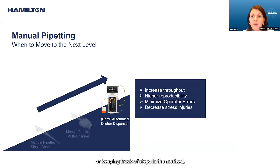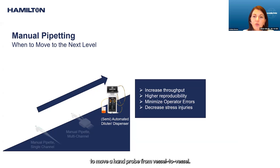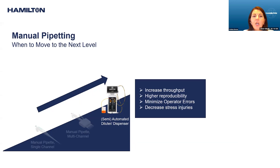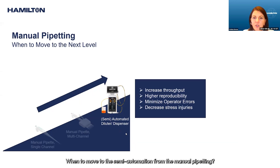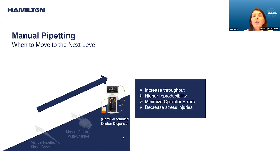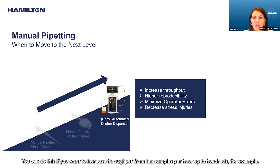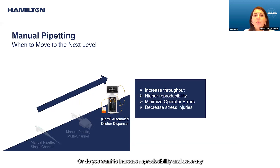Semi-automated liquid handlers automate those aspects of the work, only requiring the technician to move a hand probe from vessel to vessel. When should you move to semi-automation from manual pipetting? You can do this if you want to increase throughput from 10 samples per hour up to hundreds, or if you want to increase reproducibility, accuracy, and lower labor costs.